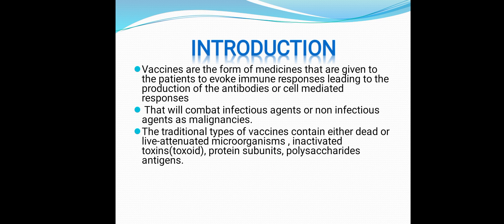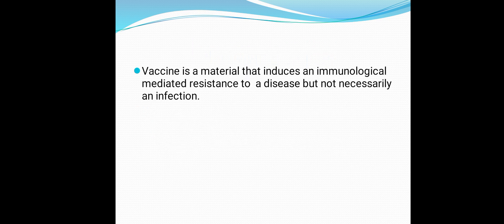Traditional vaccines can contain dead or live attenuated microorganisms, inactivated toxins called toxoids, protein subunits, or polysaccharide antigens. Vaccines like the corona vaccine or anti-rabies vaccine contain attenuated or dead microorganisms, or the DNA or RNA of microorganisms. These enter the body and produce immunity by stimulating antibody production. A vaccine is a material that induces immunological response-mediated resistance to a disease, but not necessarily an infection.